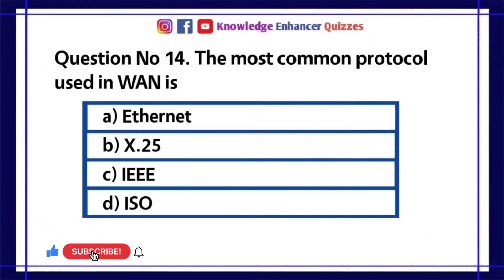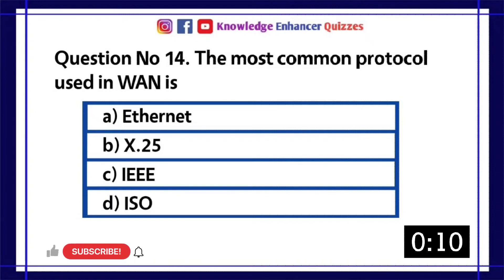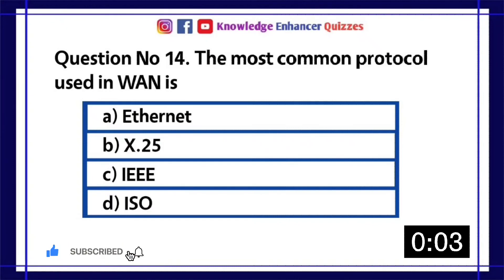Question number 14. The most common protocol used in WAN is. A Ethernet. B X.25. C IEEE. D ISO. Option B is the right answer.